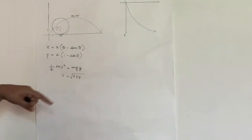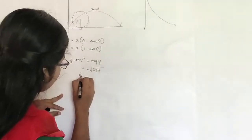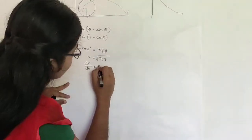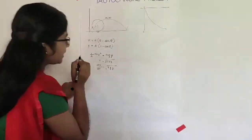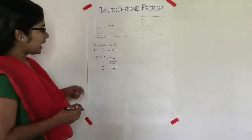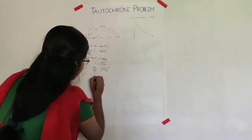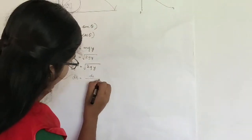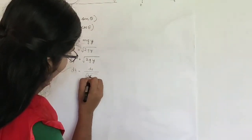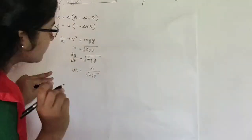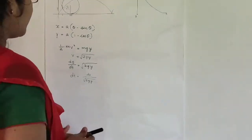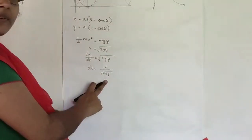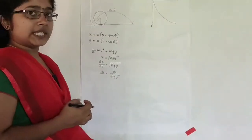Substituting v as ds/dt, we get ds/dt equals root of 2gy. Therefore dt equals ds divided by root of 2gy. Now we need to find what ds is.